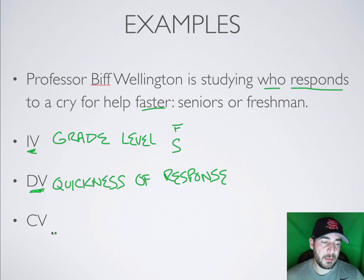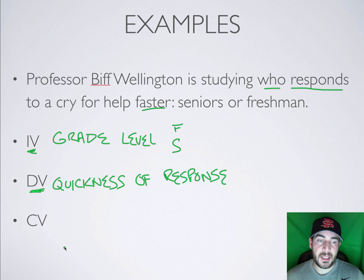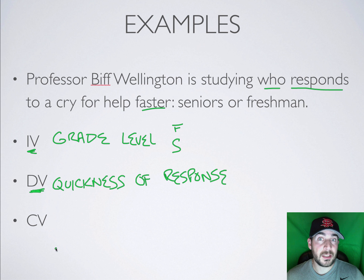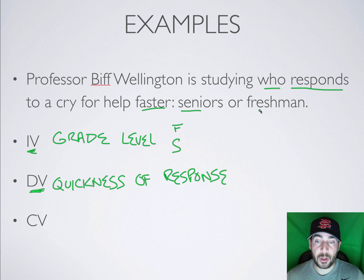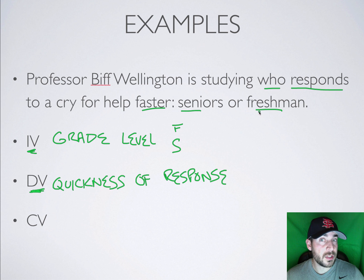Confounding variables might be maturity level, the time of day that the cry was made, or whether it was more boys or girls responding to it. Maybe more boys were asked as seniors and more girls were asked as freshmen — and maybe it wasn't the freshmen that responded better, but the fact that there were more girls there. So your confounding variable can be a lot of different things.